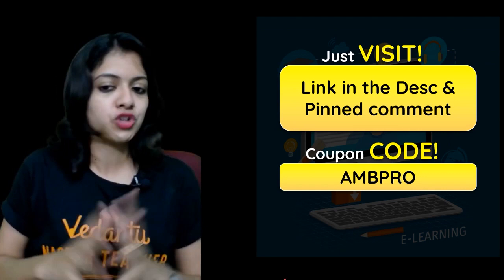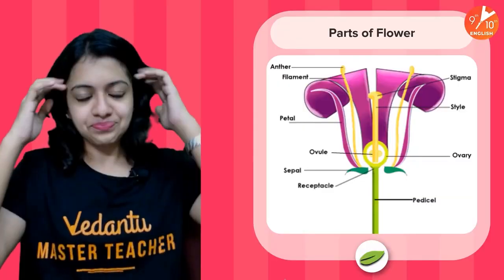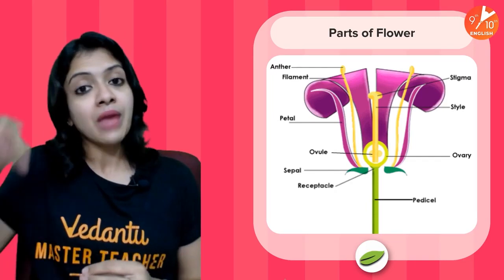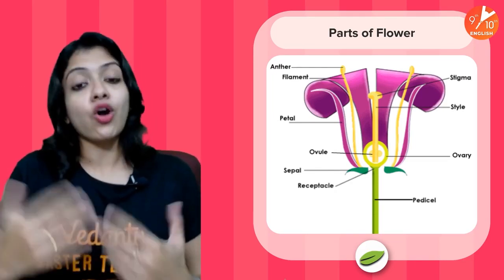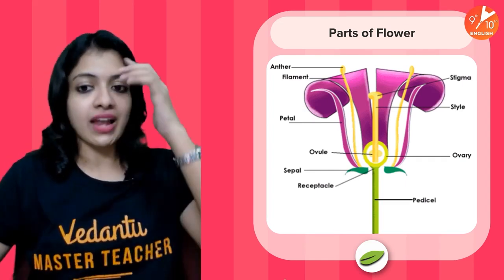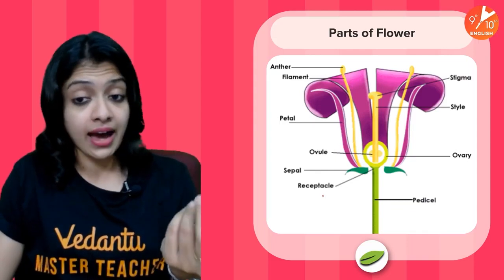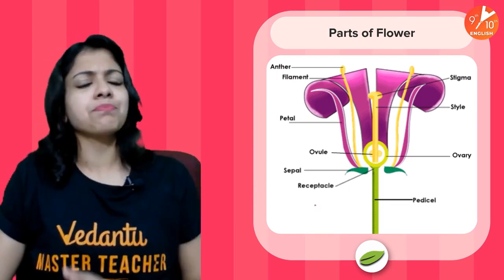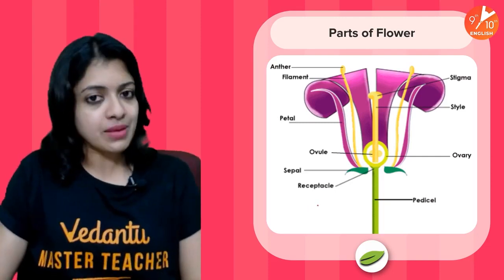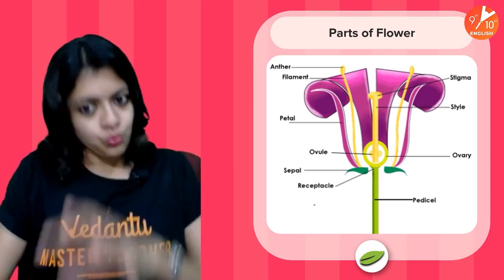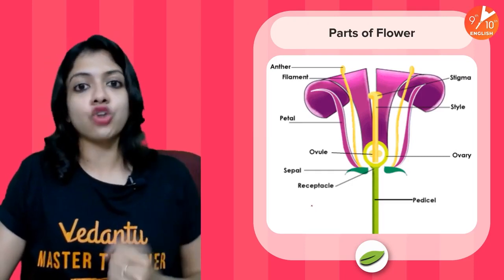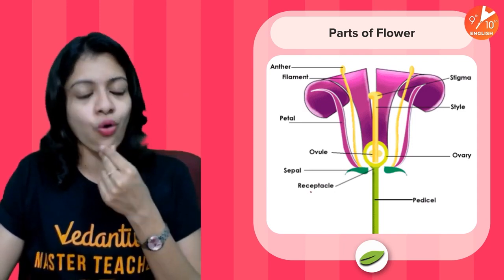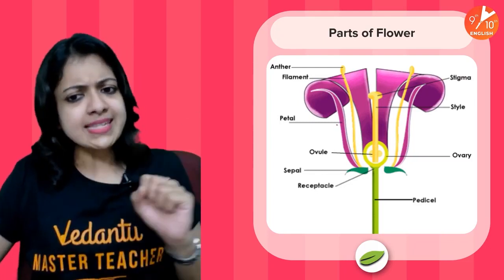Let's get started with parts of a flower. As far as flowering plants are concerned, the flower is said to be the main reproductive part of the plant. We call them angiosperms — flowering plants. The image you see here is that of a bisexual flower, wherein both the male and the female reproductive parts are found on the same flower. There are certain plants that produce unisexual flowers — a separate male flower and a separate female flower. A real-life example of a bisexual flower would be hibiscus.